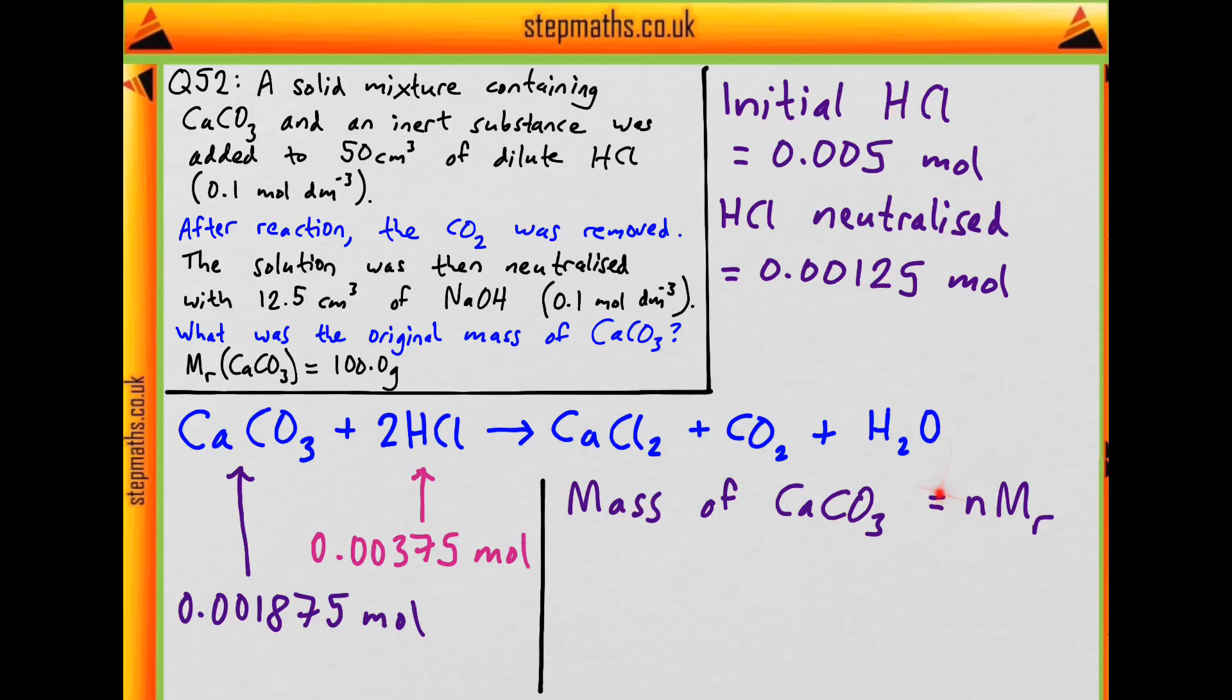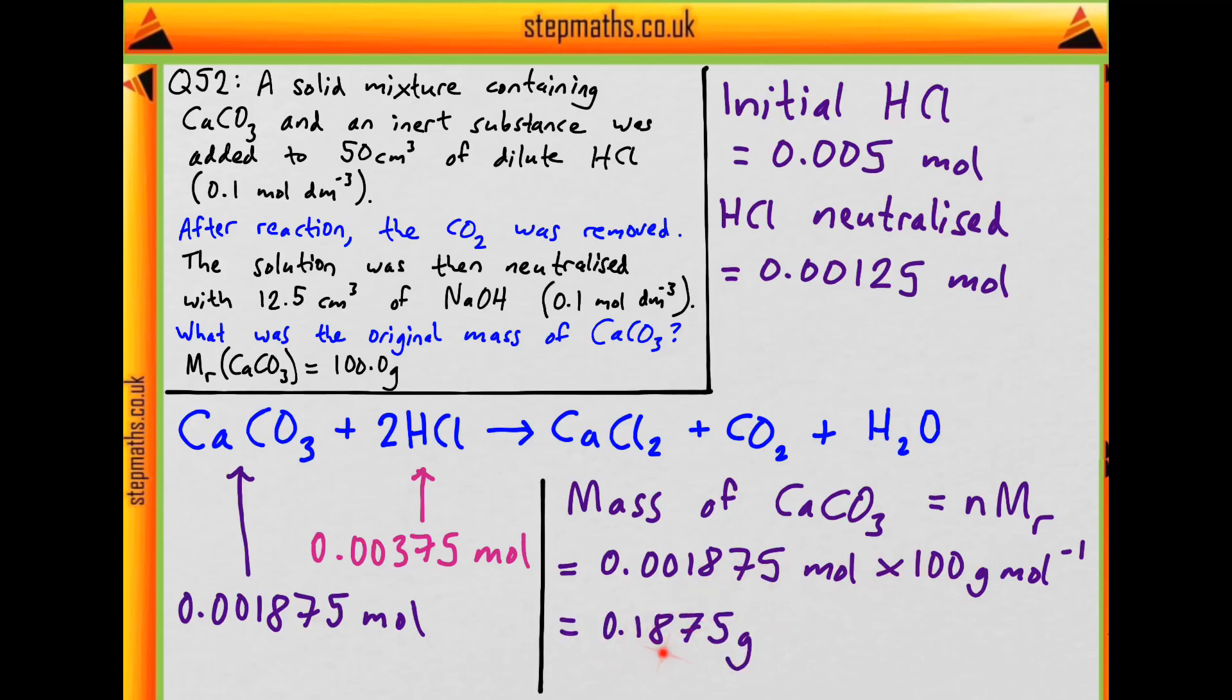Let's put the numbers in. We have this many moles times this many grams per mole. That times 100 is a nice easy one. It's 0.1875 grams, and this is how much calcium carbonate we started with. The final answer on the question paper is C.